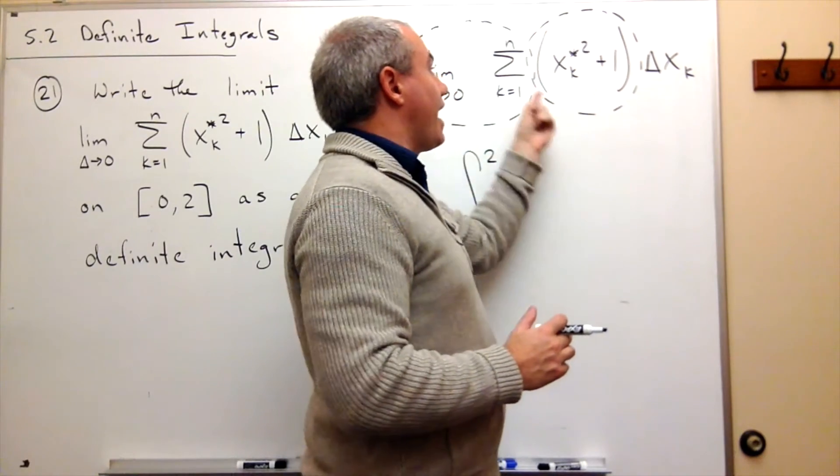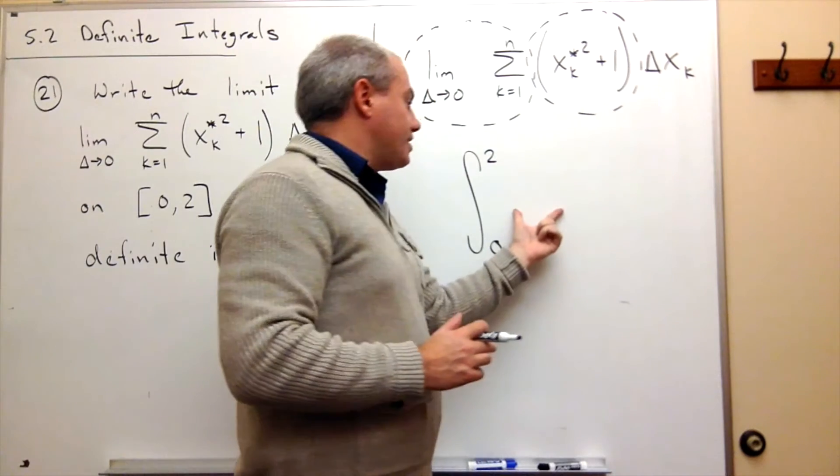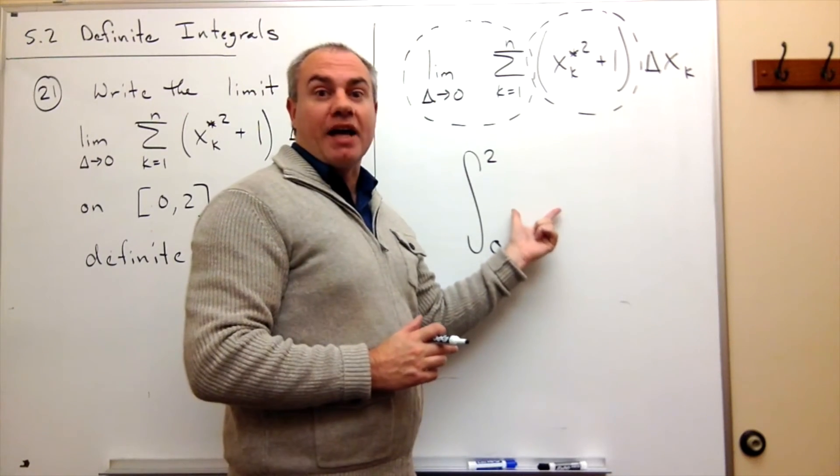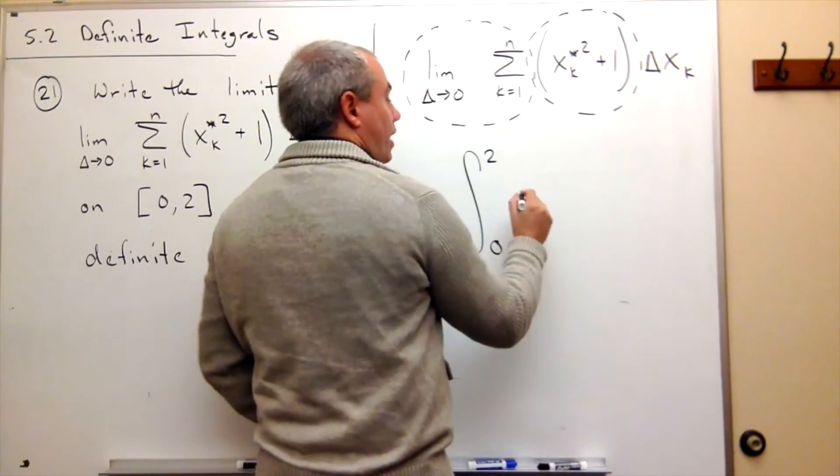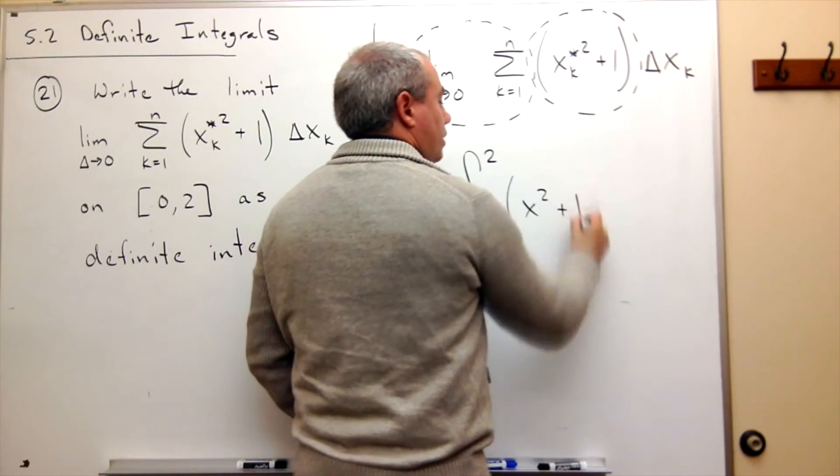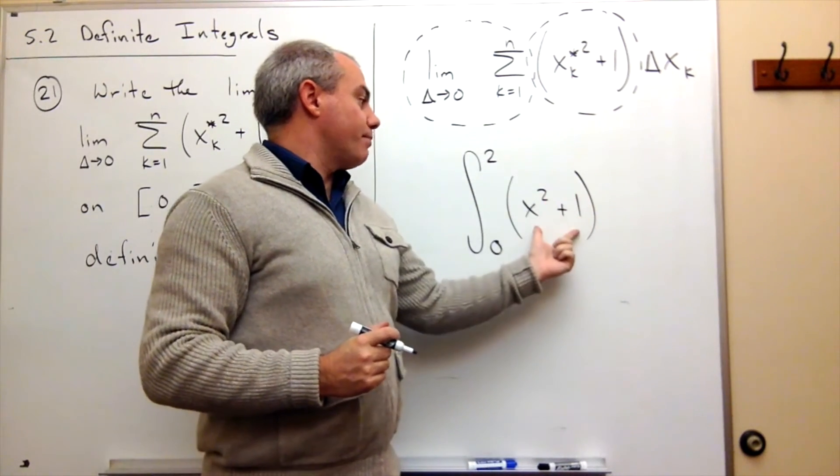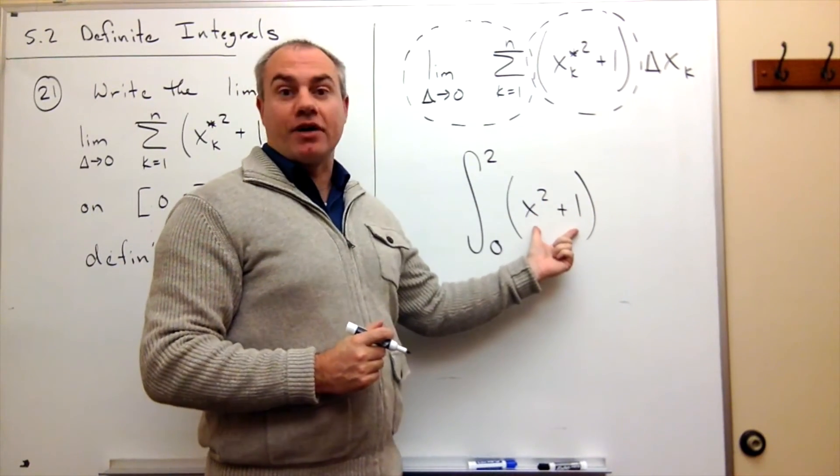So everything that's an x sub k star can just be replaced in the definite integral by an x. So we could just write this as x squared plus 1. So all x sub k stars are replaced by x's and we have our function.